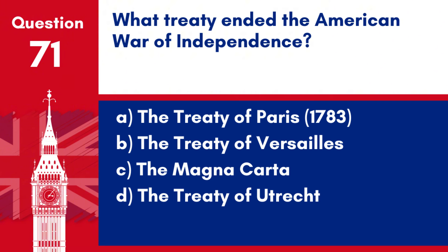Question 71. What treaty ended the American War of Independence? a. The Treaty of Paris 1783. b. The Treaty of the Sales. c. The Magna Carta. d. The Treaty of Utrecht.